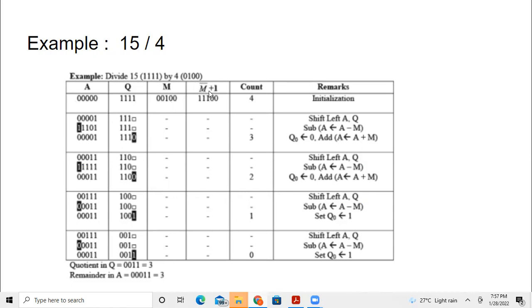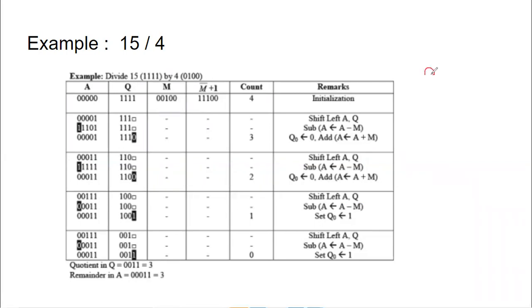We find M bar plus one, which is the two's complement of M. The one's complement of 0 0 1 0 0 is 1 1 0 1 1, and adding one gives 1 1 1 0 0. Since binary division is performed by repeated subtraction, subtraction is done by finding the two's complement of the divisor and adding.